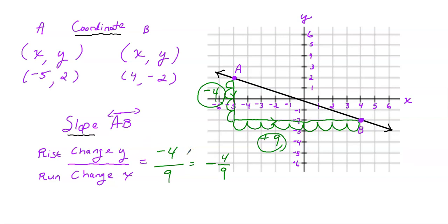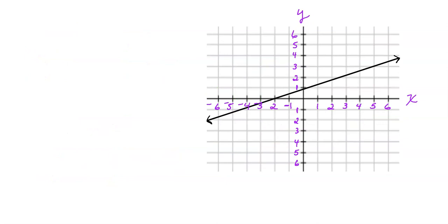Let's go ahead and look at one more problem. What's different about it? There are no points drawn on the line. The line slants upward from left to right, so I know the slope is going to be positive. When there are no points on the line, you can draw in points — but make sure they fall where the grid lines touch each other.